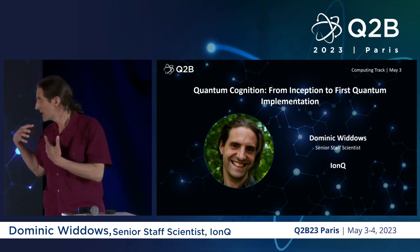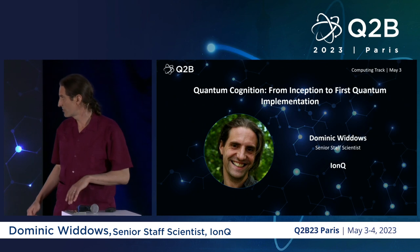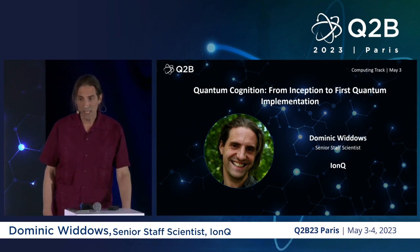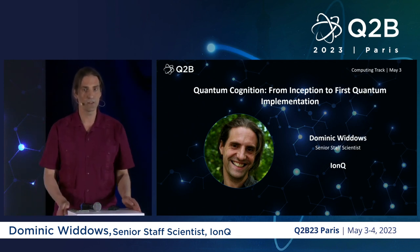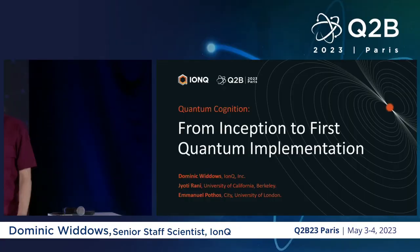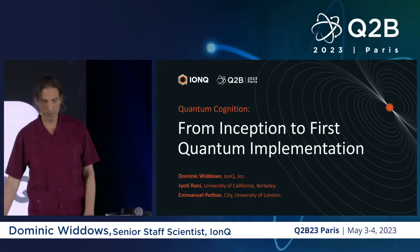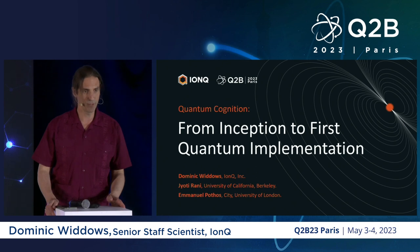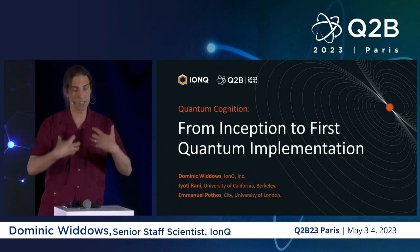I'm going to talk today about quantum cognition from inception to first quantum implementation, because we've been doing this for quite some time. I'd like to thank the organizers and particularly Julian for the previous talk. There's an Entropy paper about this work titled 'Quantum Circuit Components for Cognitive Decision Making,' because this is about how we build these things using quantum circuits.